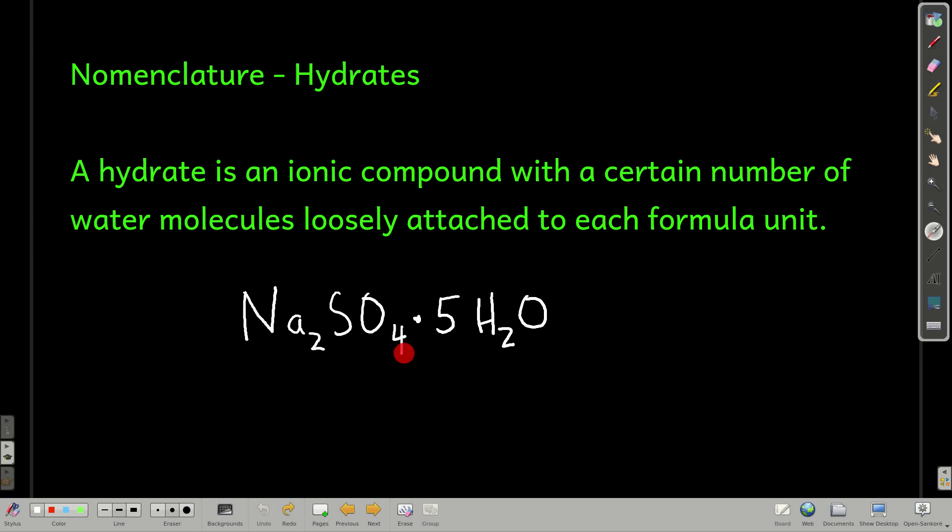The first part of the formula is the ionic compound. And it always has waters, H2Os back here, with some number in front after the bullet. Unless that number is one. If it's one, we don't write anything, we just write H2O.